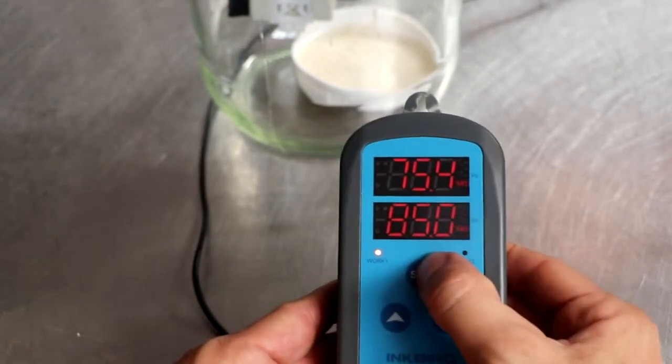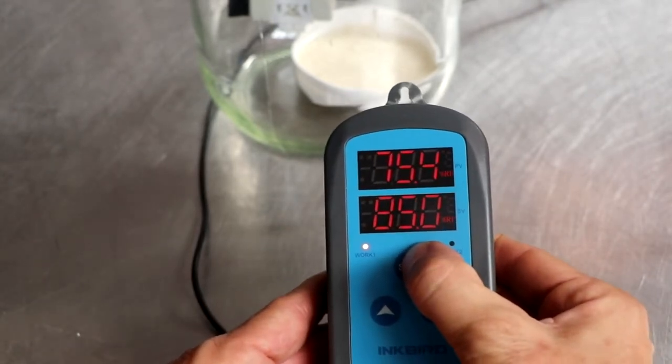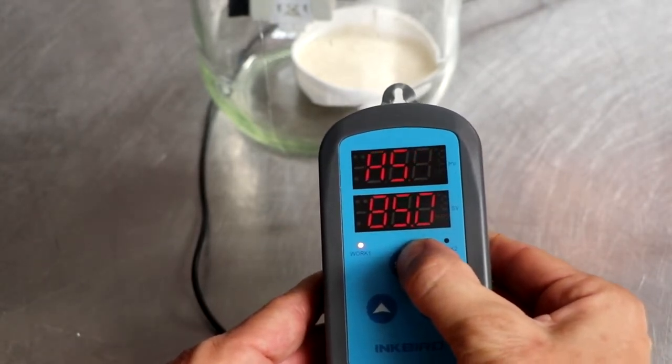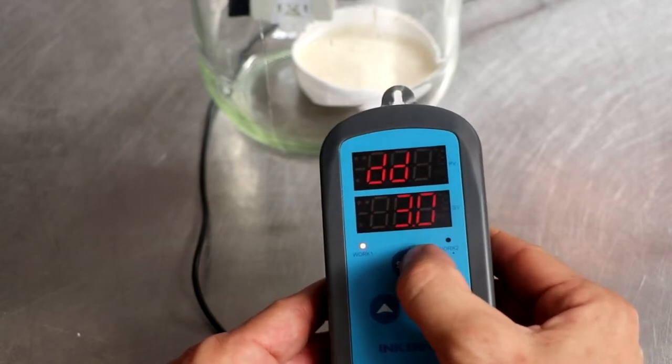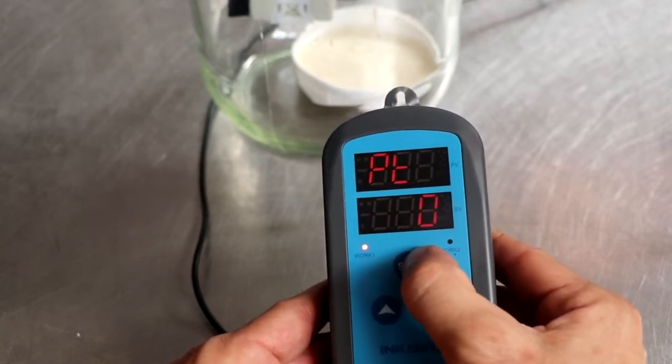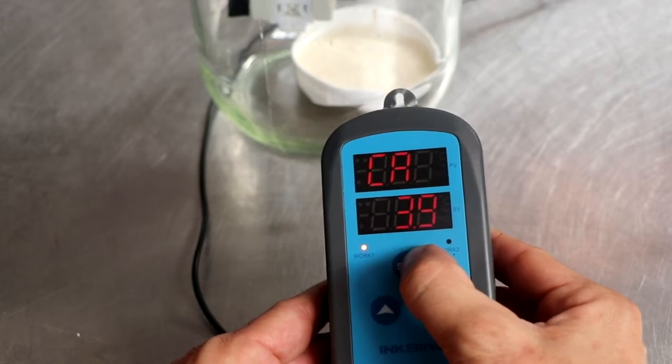The Inkbird isn't complicated either. You press and hold the set button for a couple of seconds, three seconds, I believe. And then you just scroll through the menus until you get to the CA option, which means calibrate.